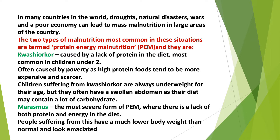They are Kwashiorkor and Marasmus. Kwashiorkor is caused by a lack of protein in the diet, most common in children under 2. It is often caused by poverty as high-protein foods tend to be more expensive and scarcer. Children suffering from Kwashiorkor are always underweight for their age, but they often have a swollen abdomen as their diet may contain a lot of carbohydrate.